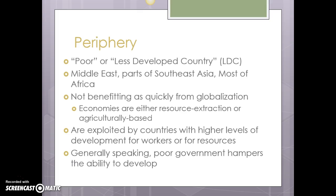Higher-level folks from periphery countries move to go to college and often never move home — they settle into those wealthier countries because life is better, they can make more money and have access to more resources. Government is generally better in those countries. In the periphery, poor governance is part of why they're in the periphery, because it hampers their ability to develop and really prevents them from developing in the way that they need to.